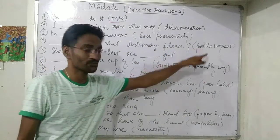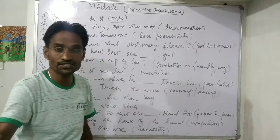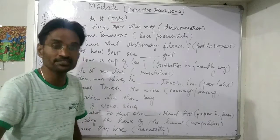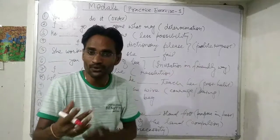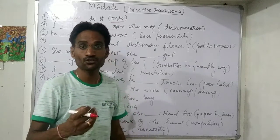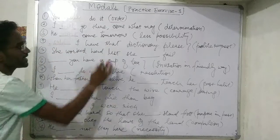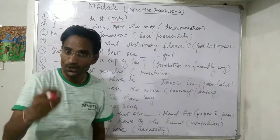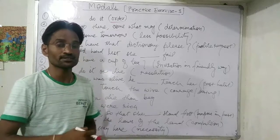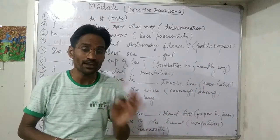Next: 'I have that dictionary please' — this is a polite request. You are asking very politely. For a polite request, we use the modal 'could.' So: 'Could I have that dictionary please?' 'Could I have your mobile please?' 'Could I have your bike please?' Whenever you want to make a very polite request, you use 'could.'